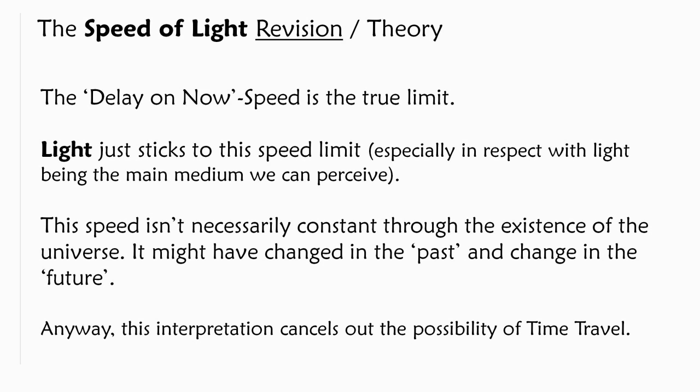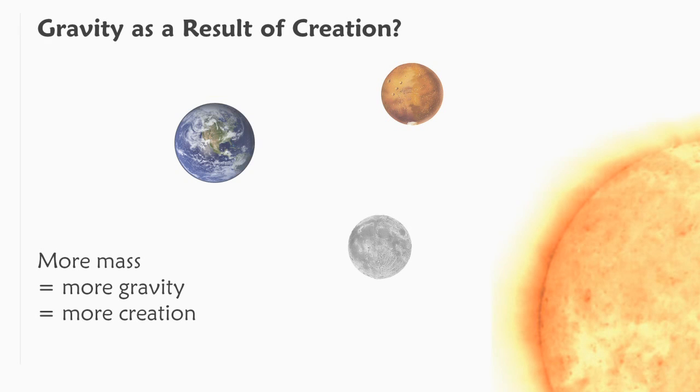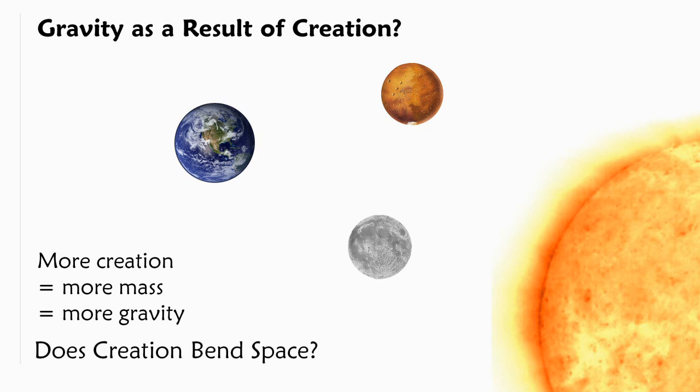From here we can do another big step but it's just another question. Right now we say mass is more gravity and that's more creation. But would it make sense to rearrange this to more creation means more mass and more gravity? So does creation bend space?